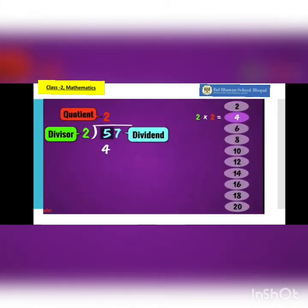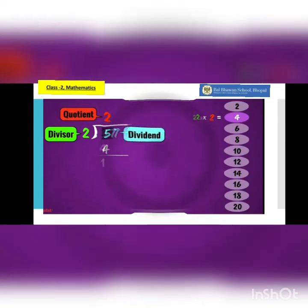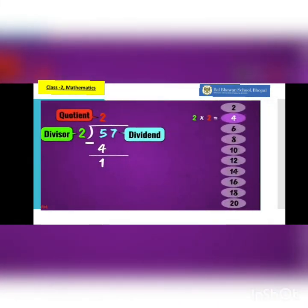Everything is defined here: quotient, divisor, and the dividend 57. We have taken only the tens place because it is a big number - we cannot divide it as it is. To make it easy we have taken the tens place and found a number for 5. We didn't find an equal number, so we took 4, which is closer to 5. When we subtracted 4 from 5, one is left.